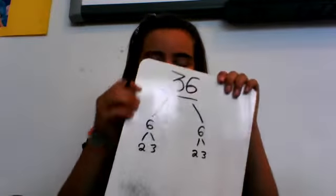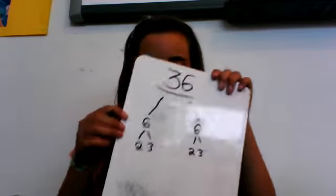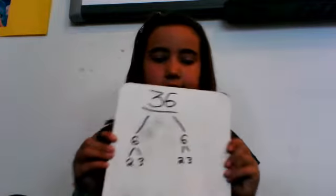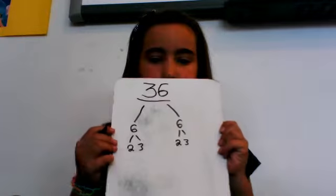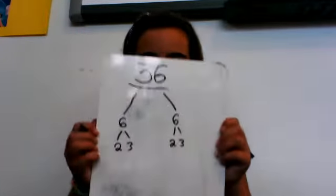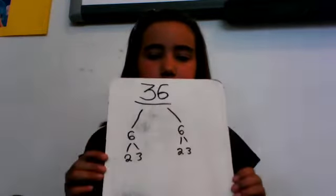The prime factors of 36 are two, two, three, three.